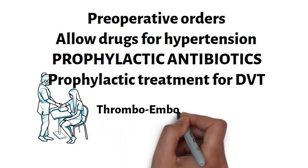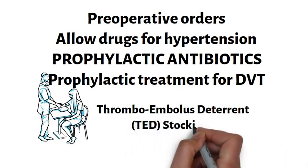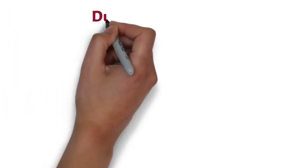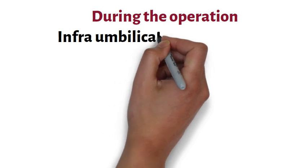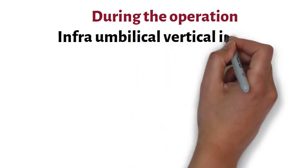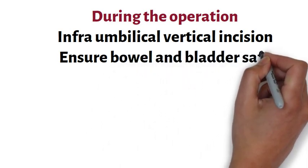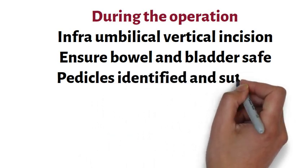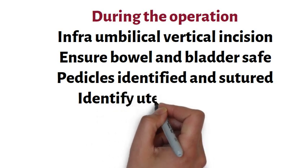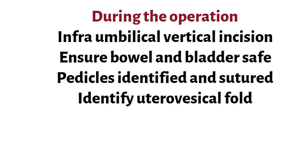On the day of surgery, a member of the operating team should be in the OR to receive the patient. During the operation, special precautions are taken to ensure safety. If we anticipate adhesions in the pelvis, an infra-umbilical vertical incision should be made to access the pelvis and the lower part of the abdomen freely. While opening the abdomen, ensure the bowel and the bladder are safe.